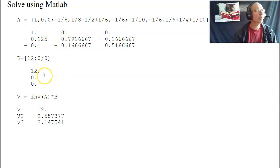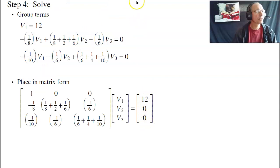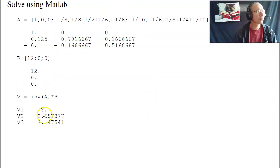The B matrix, or the constant, that's your 12 volts, zero, zero. Then the voltage is just the inverse of A times B. So you should get 12 volts, 2.5 volts, 3.14 volts.